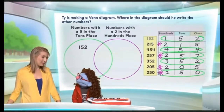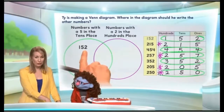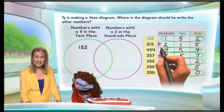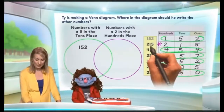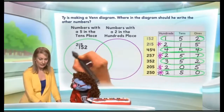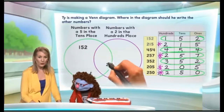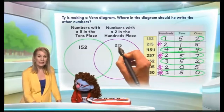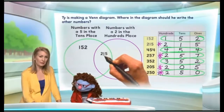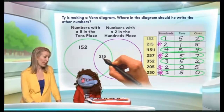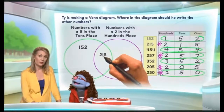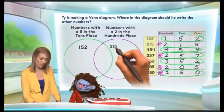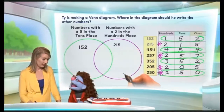So now we're going to place the rest of the numbers. We placed 152. Now we're going to place 215. Remember what we said — 215 is a number with a two in the hundreds place. So where are we going to place this number? In the purple circle. But can we place it in the overlap? No, because it doesn't have a five in the tens place. There is no five in the tens place in this number, so it can't live in the overlap. We'll put it outside the overlap. You can tell so easily by the chart we made.